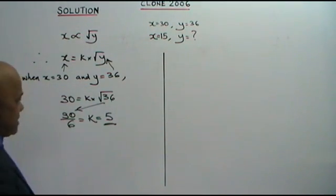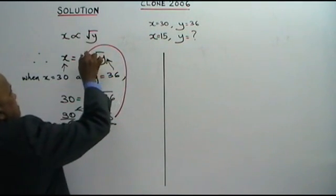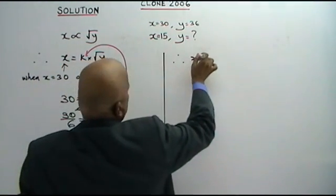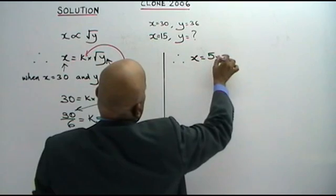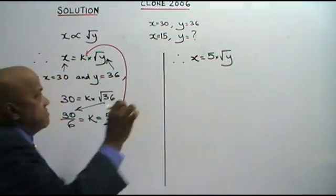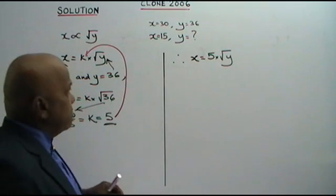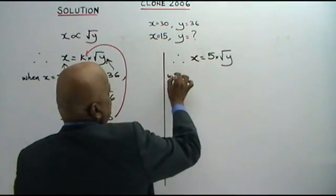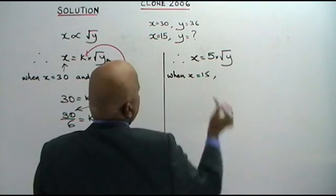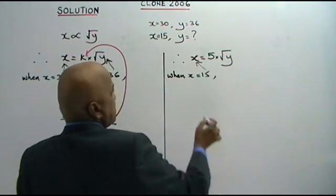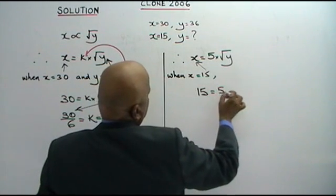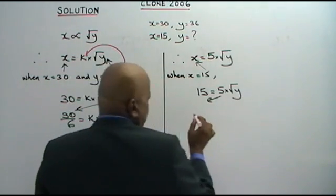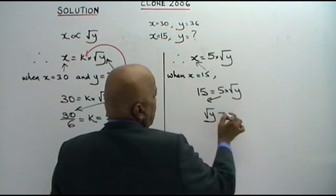We have found the value of K. We transfer the value of K in, so therefore X is equal to 5 times the square root of Y. Now substitute X equals 15: 15 is equal to 5 times the square root of Y. 15 divided by 5 is 3, so the square root of Y equals 3.